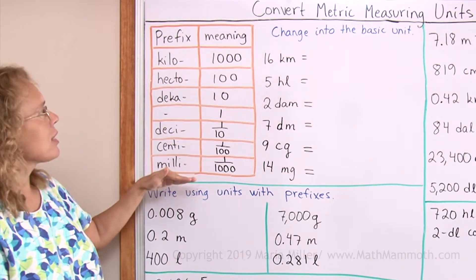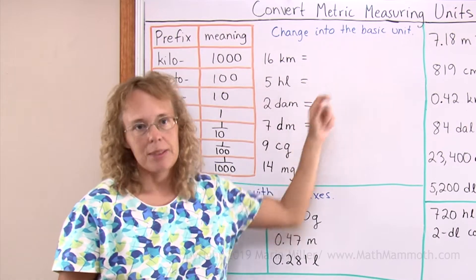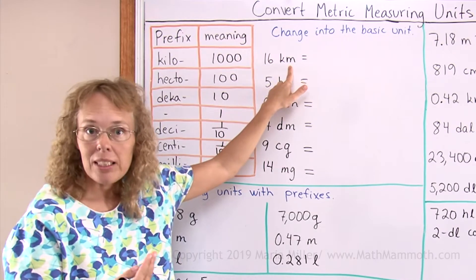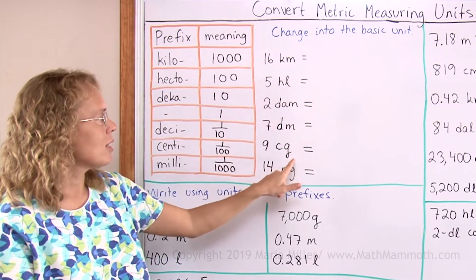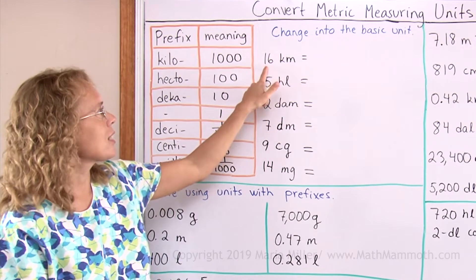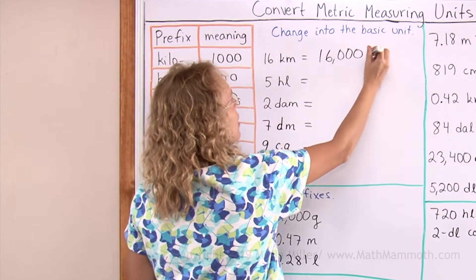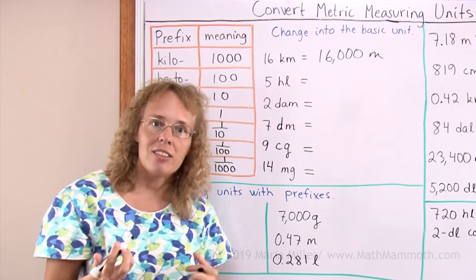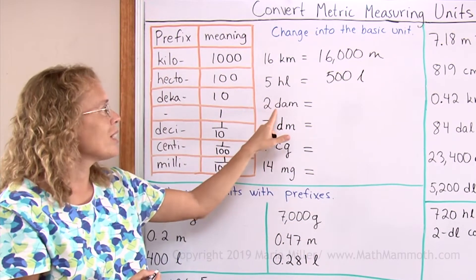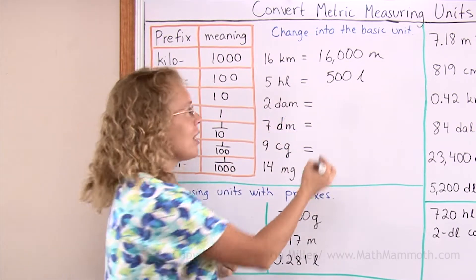To practice these prefixes, we convert units with a prefix to the basic units. For example, sixteen kilometers to meters — just think of the meaning of the prefix. Kilo means thousand, so here is sixteen thousand meters. Five hectolitres: hecto means hundred, so we have five hundred liters. And two decameters: deca meaning ten, so two times ten is twenty meters.